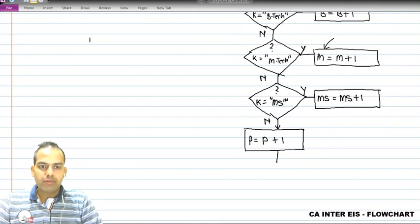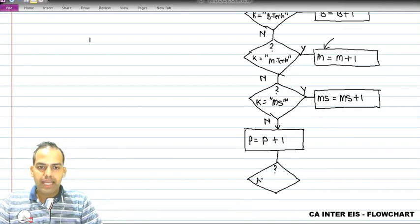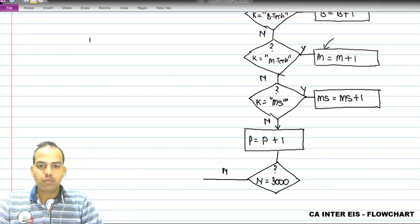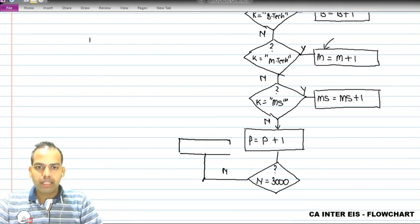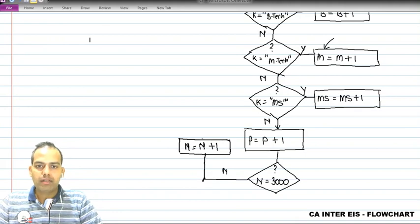I don't want to end the program right now, so I add a decision box asking: is n equal to 3000? Because there are 3000 students total. If the answer is no, the program should loop back up, but before it goes up I want the counter to change - so n equals n plus 1.